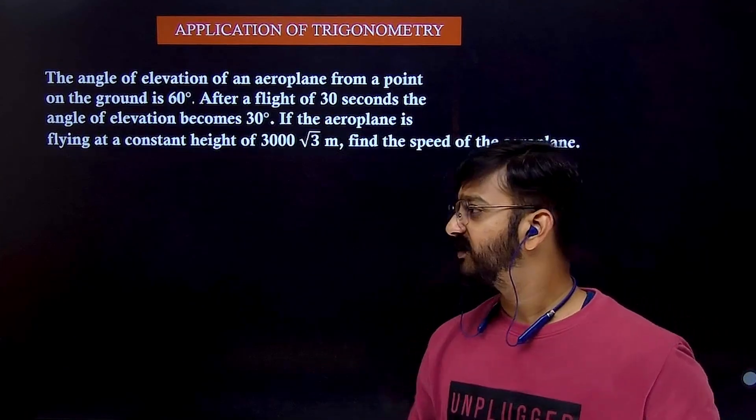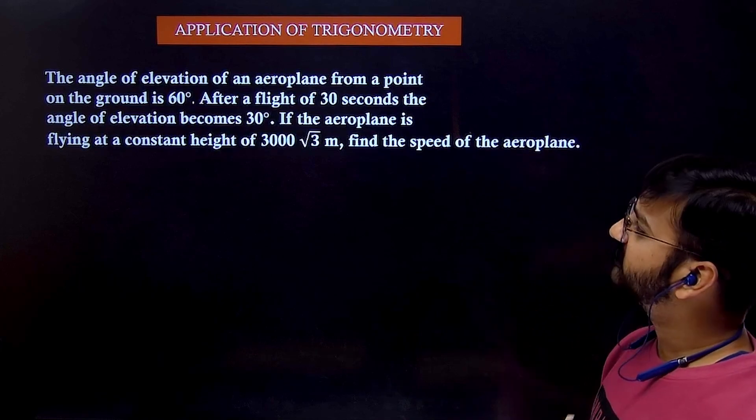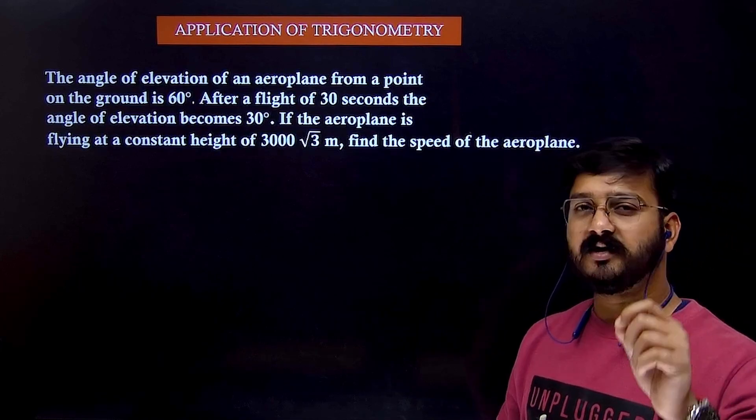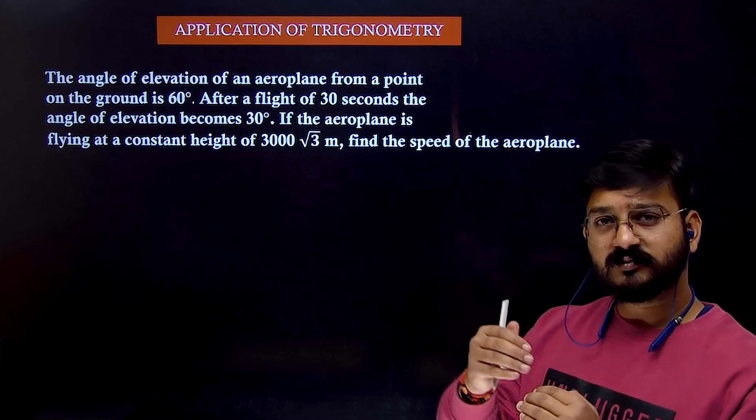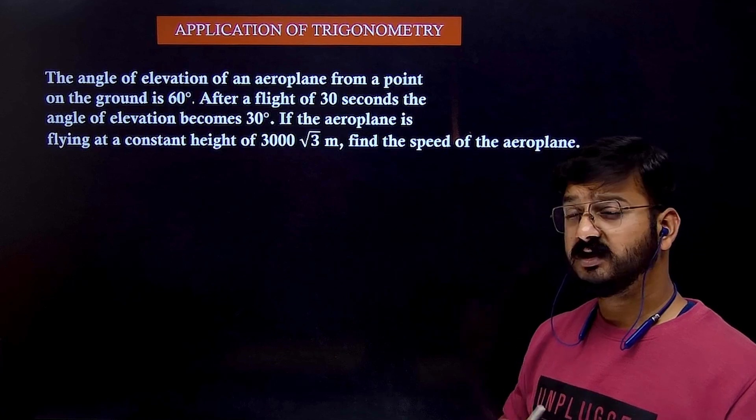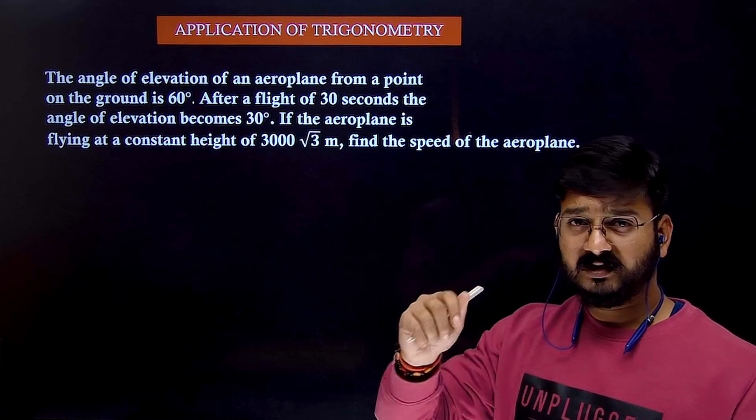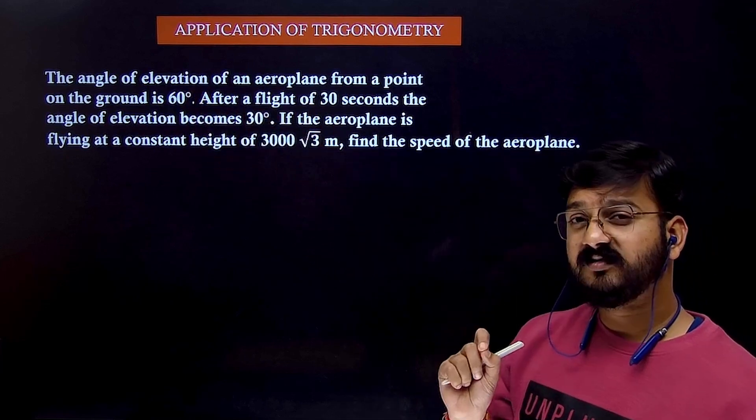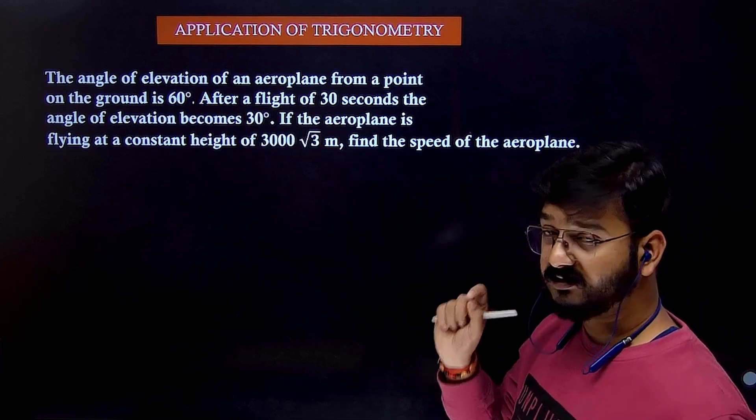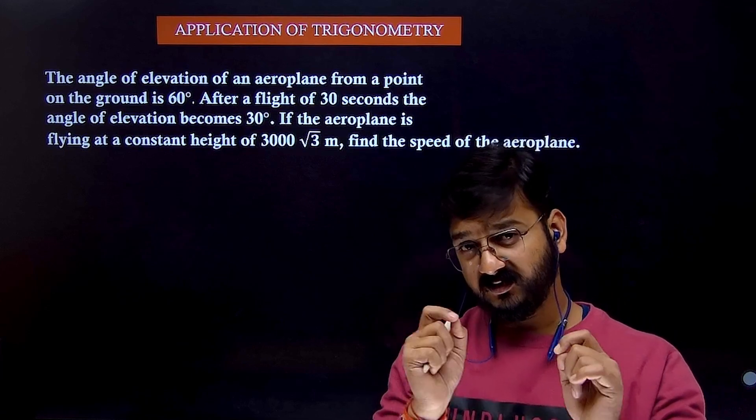Okay students, let's take this question. If you see that this question is similar to the previous one only, but instead of bird, what do we have now? An aeroplane. You're observing the aeroplane at an angle of 60 degrees. The aeroplane is moving for a time of 30 seconds. So obviously, what will happen? The angle of elevation will reduce. And that's what you can see. Angle of elevation is coming from 60 to 30 degrees. Plane is flying at angle of 3000 root 3. Find the speed of the plane. Let's draw the figure quickly.